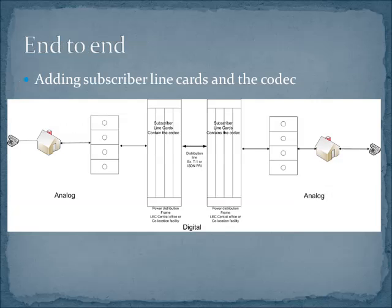Now if we look end to end, a couple of things jump out at us. The local loops on either end — where the two telephones are — are both analog. But in the middle, the PSTN is digital. So what we're taking is your analog voice, we convert it to digital, and then we reconvert it back to analog at the other end. So how does all that happen?